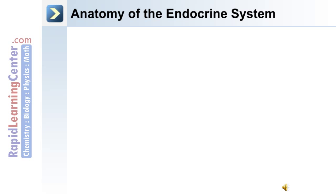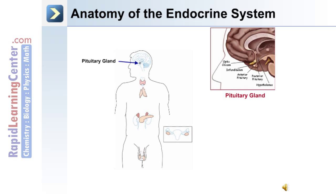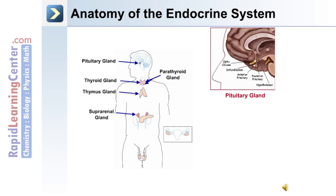The major organs and glands of the endocrine system include: the pituitary gland, made up of the anterior and posterior lobe; the thyroid gland; two parathyroid glands located on the thyroid; the thymus gland in the chest; the suprarenal gland on top of each kidney; and the pancreas and the gonads — the testes in the male and the ovaries in the female.